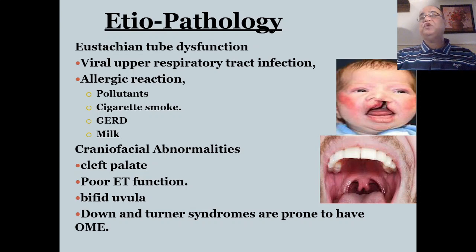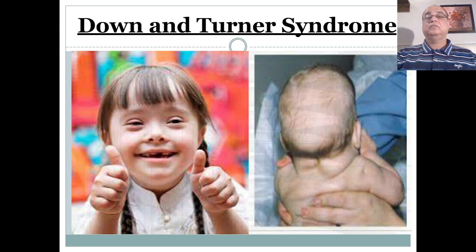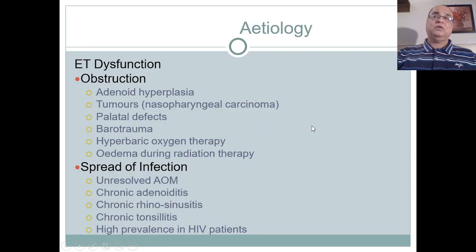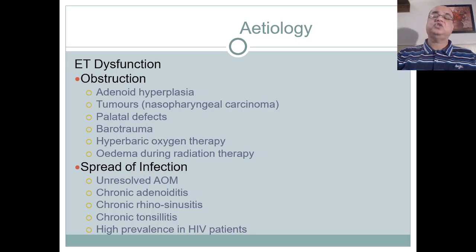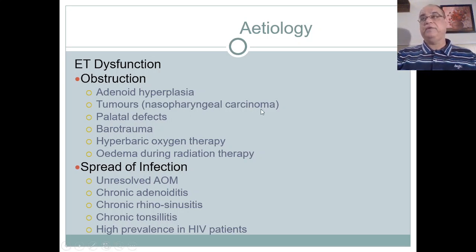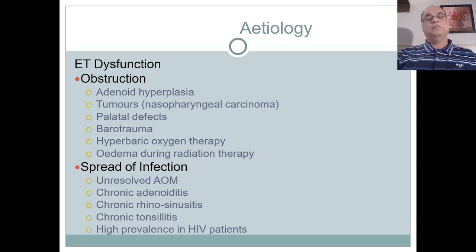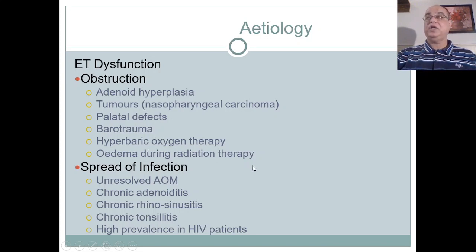Craniofacial abnormalities like Down syndrome and Turner syndrome predispose to eustachian tube dysfunction. Eustachian tube dysfunction may also be due to a mass in the nasopharynx like adenoids, which become hypertrophied and mechanically block the opening, or repeated infections cause edema of the eustachian tube opening. Importantly, if a Chinese patient presents with unilateral otitis media with effusion and conductive hearing loss, one must be suspicious of nasopharyngeal carcinoma. Palatal defects, barotrauma, hyperbaric oxygen therapy, and edema during radiation therapy for head and neck tumors are also causes.